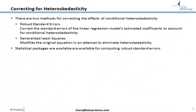If we find heteroscedasticity, there are two main methods to address it. One is computationally intensive: robust standard errors, where we try to look at more data and get the regression model parameters as close as possible. The other is to use the generalized least squares method, which actually modifies the way the model is formed. Generalized least squares is quite common, and robust standard errors are also frequently used now that statistical packages and computing power are sufficient to make that work.